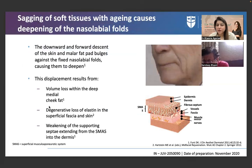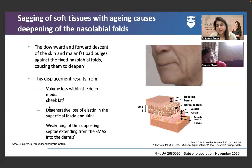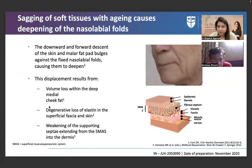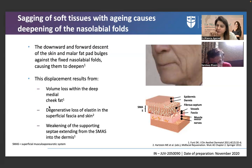Sagging of soft tissues with aging causes deepening of the nasolabial fold. The forward and downward descent contributes to this deepening. The descent of skin and malar fat pad bulges against the fixed nasolabial fold, causing it to deepen.